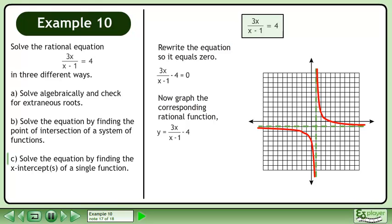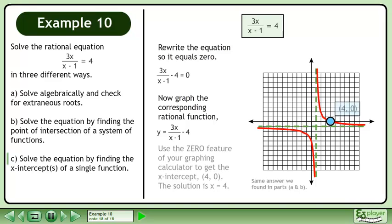Now graph the corresponding rational function, y equals 3x over x-1 minus 4. Use the 0 feature of your graphing calculator to get the x-intercept, 4, 0. The solution is x equals 4. This is the same answer we found in Parts A and B.